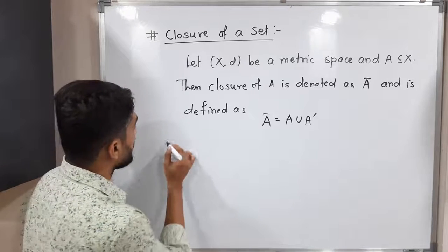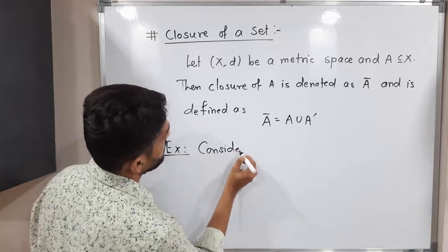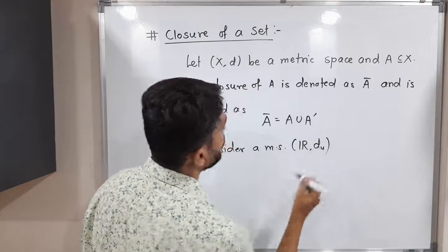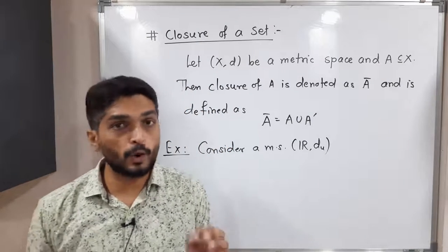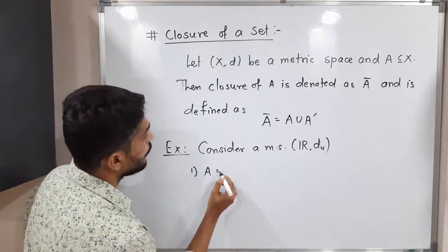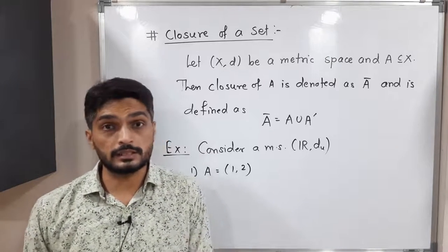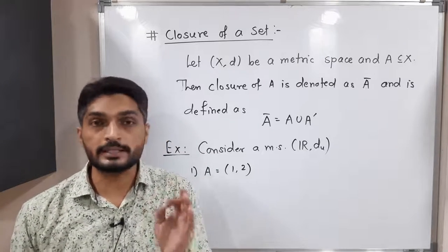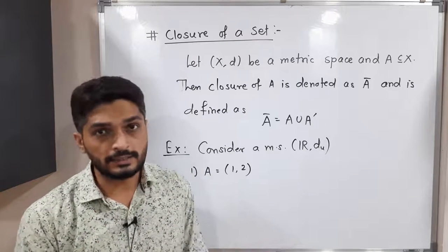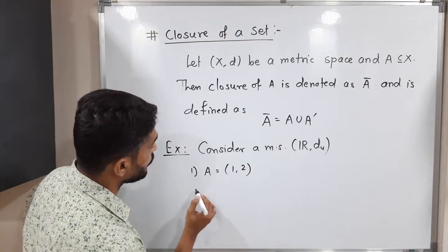Let us discuss a few examples so you can easily understand this concept. Consider the metric space ℝ with the usual metric d(x,y) = |x - y|. I am considering the set A equal to the open interval (1, 2). These examples we have already discussed for finding limit points in our previous video, so the same example we are discussing here but for closure.